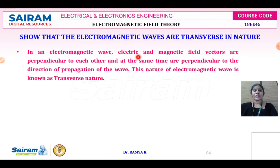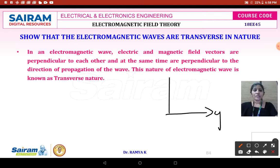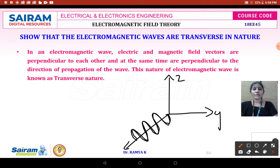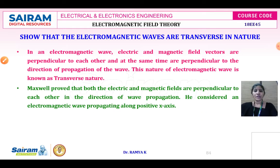In an electromagnetic wave, the electric and magnetic field vectors are perpendicular to each other and at the same time perpendicular to the direction of propagation. The wave propagates along the x-axis, the electric field is along the y-axis, and the magnetic field is along the z-axis. Both fields are orthogonal to the direction of wave propagation — this nature of the electromagnetic wave is known as transverse.